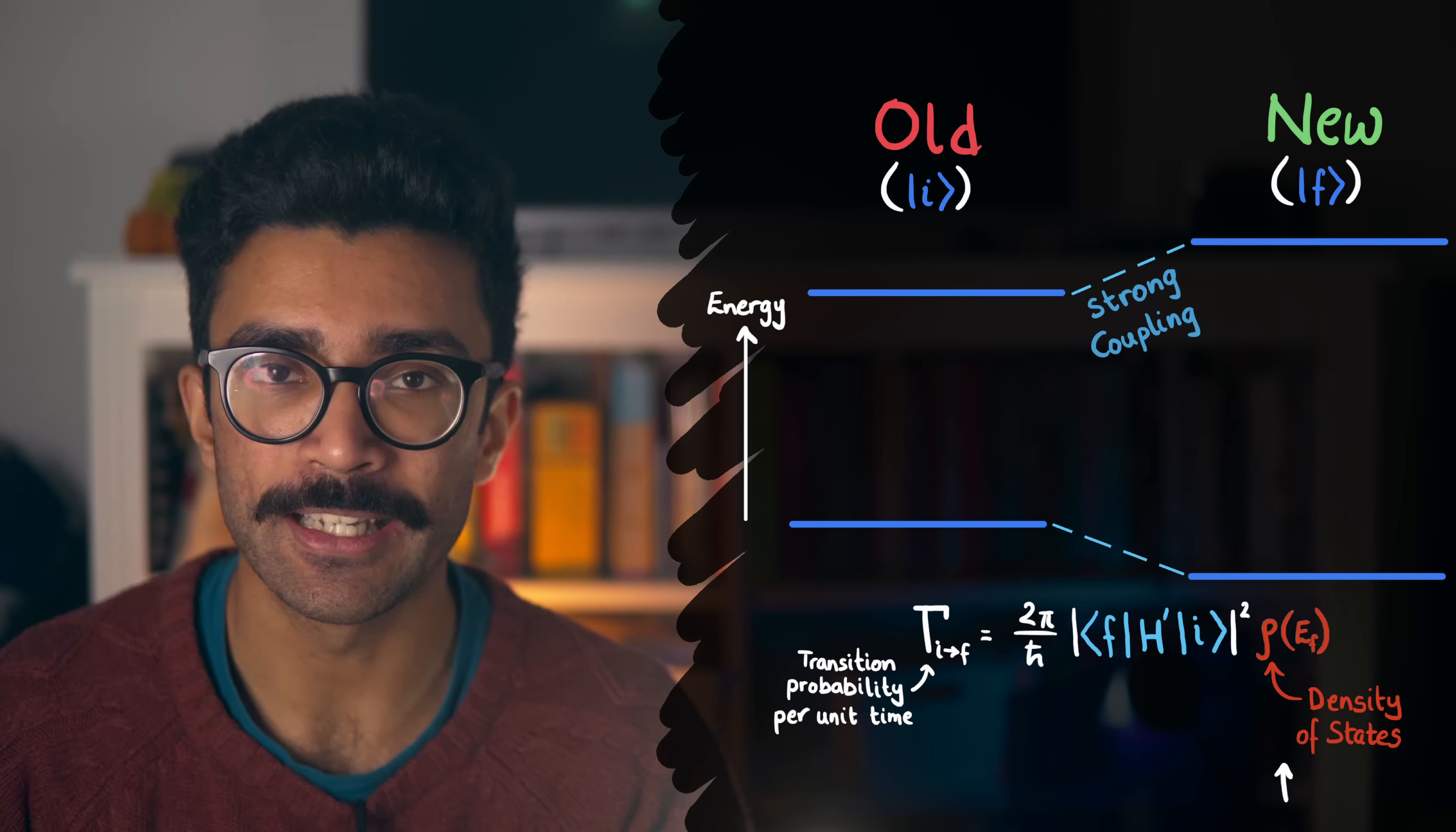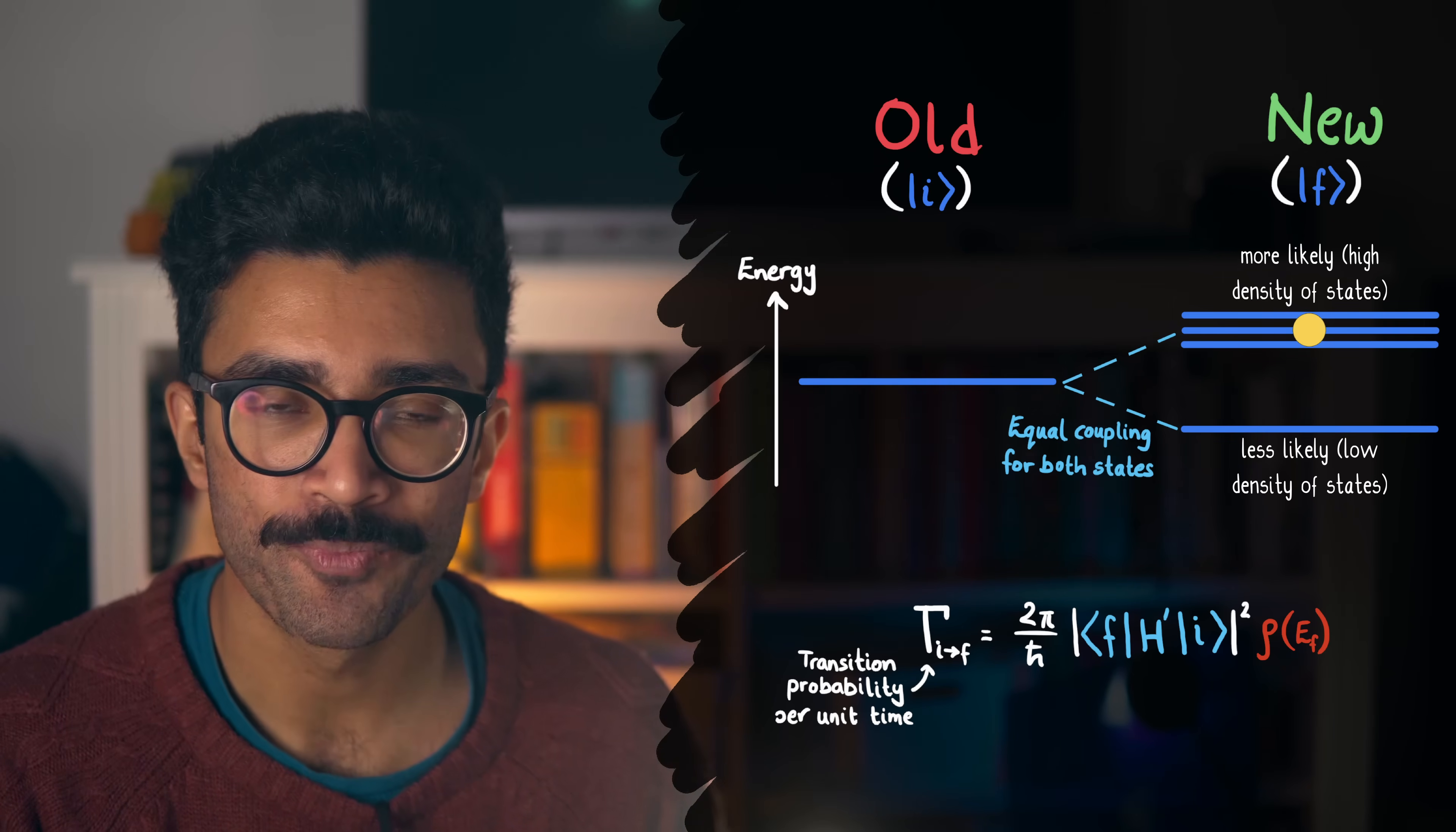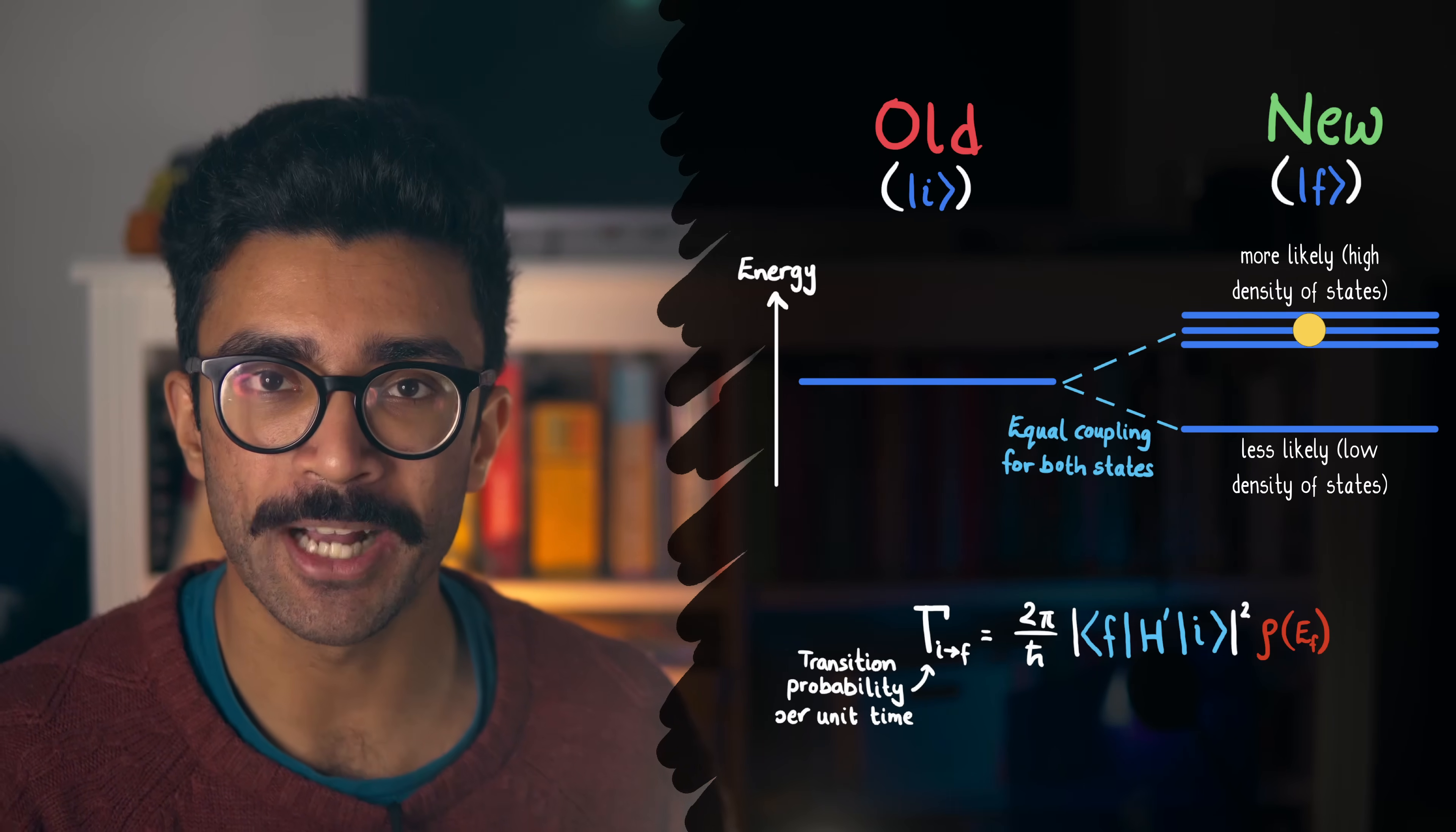And this density of states intuitively makes sense, or at least we can understand it in the following way. Any energy range where there are lots of states is more likely to have a transition there, right? Because there are more states to transition into. And especially if that group of states is close in energy to the energy level, which is of course described by the coupling term.